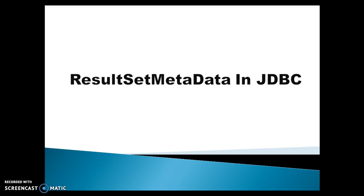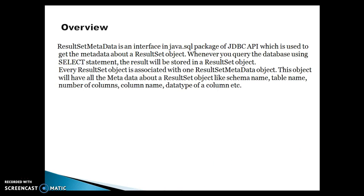ResultSetMetadata is an interface in the java.sql package of the JDBC API, which is used to get the metadata about the ResultSet object. Whenever you query the database using a SELECT statement, the result will be stored in a ResultSet object. Every ResultSet object is associated with one ResultSetMetadata object, which will have all the metadata about the ResultSet — like schema name, table name, number of columns, column name, and data type of the column.